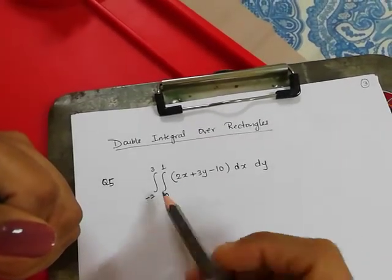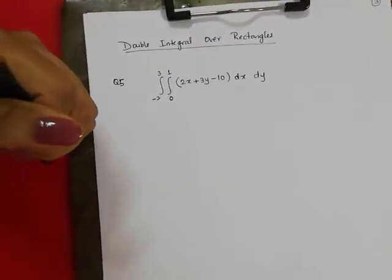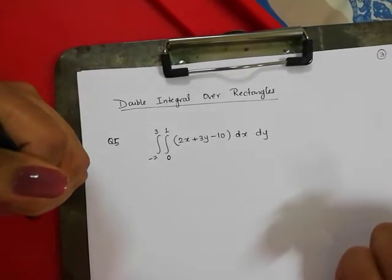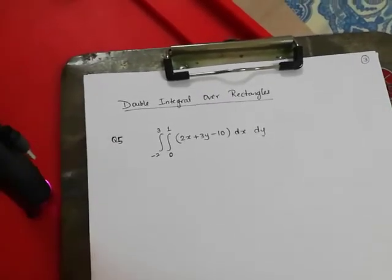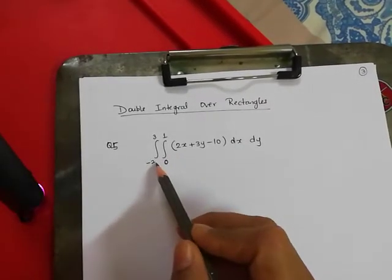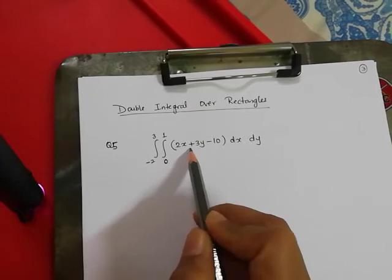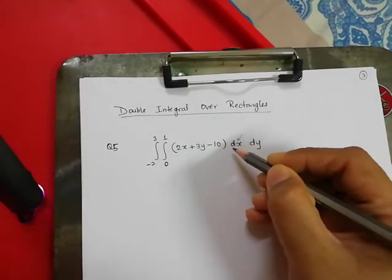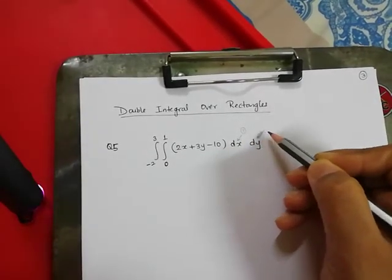We are going to begin with the question of double integral. When we come across such a question, the first thing that comes to mind is how do we start integrating, because we can see two variables x and y. How do we know that we have to start with x or with y? Whenever the integral question is a double integral, we have two integral signs and two variables. We always start with the variable mentioned first — since dx is first, we start integrating with x first.